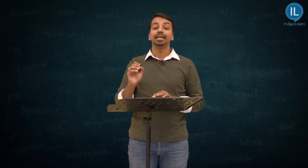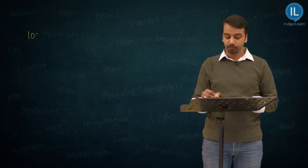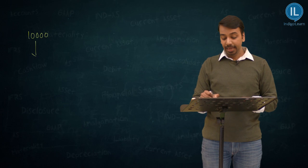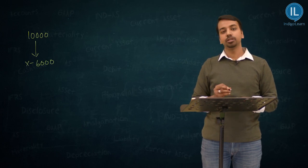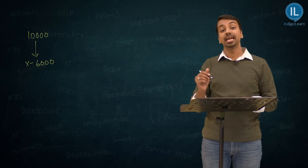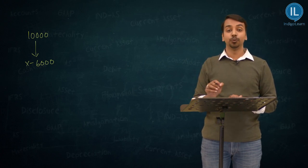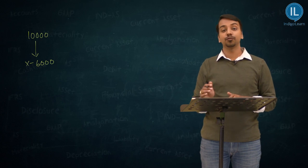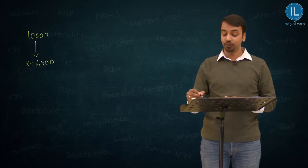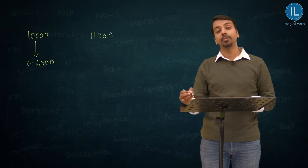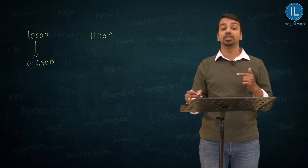Let us take the example of our company A Limited which has issued 10,000 shares. Out of these 10,000 shares, X has underwritten 6,000 shares. At the end of the issue, the company got applications for 11,000 shares. So we issued 10,000, the public liked our company and the public has given applications for 11,000 shares.